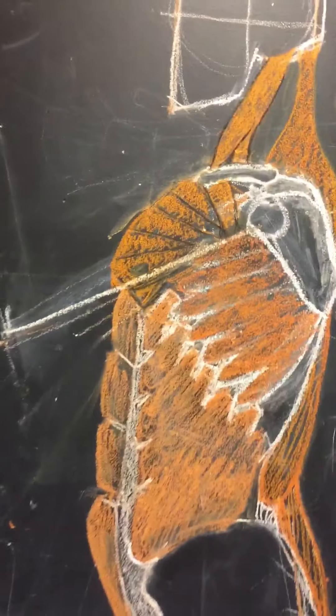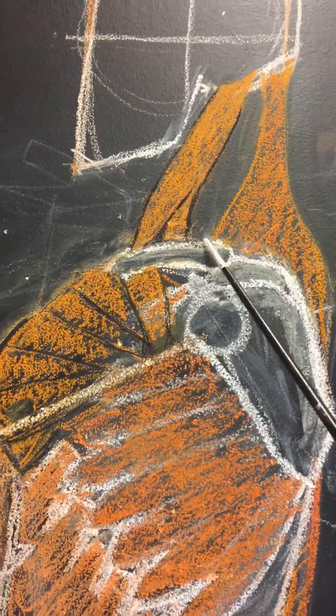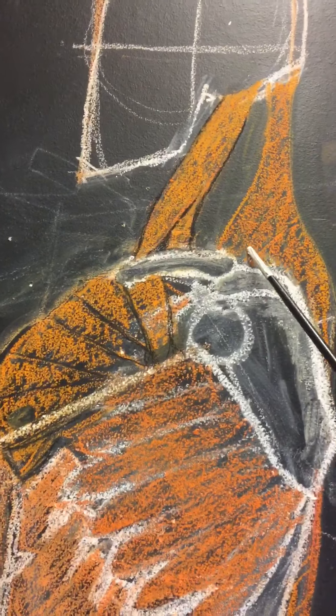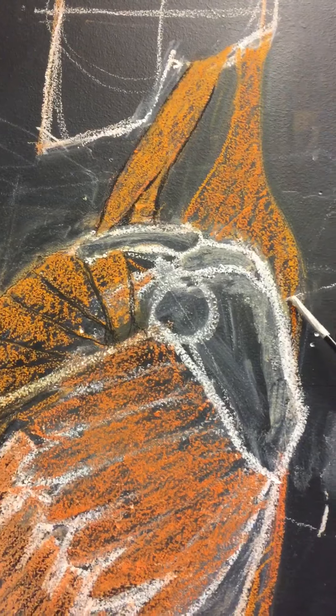Okay, so from the side it looks like this again, coming down attaching to the clavicle and the acromion process, running down the spinal scapula and then disappearing behind.